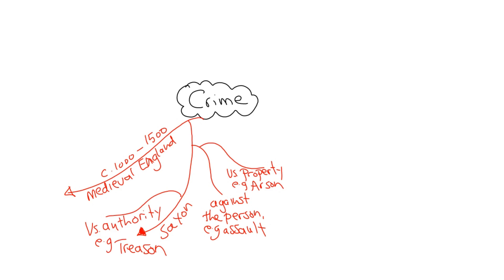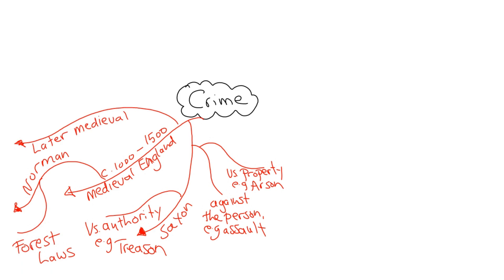Moving to the Norman era from 1066, we have forest laws introduced by William. In the later medieval period, after the Black Death, with people questioning the church, you see the emergence of heresy laws.